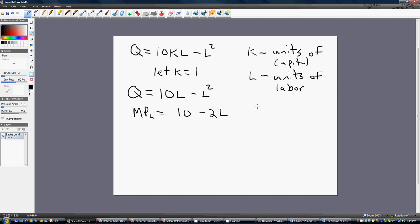On the other hand, you might be told to solve for the marginal product of labor from the production function. In that case, if you were to take the derivative of this production function with capital fixed at 1, you're going to get 10 minus 2L. So, depending on your instructor, you may be given the marginal product of labor, or if you're expected to use calculus, you'll be able to solve it as 10 minus 2L.